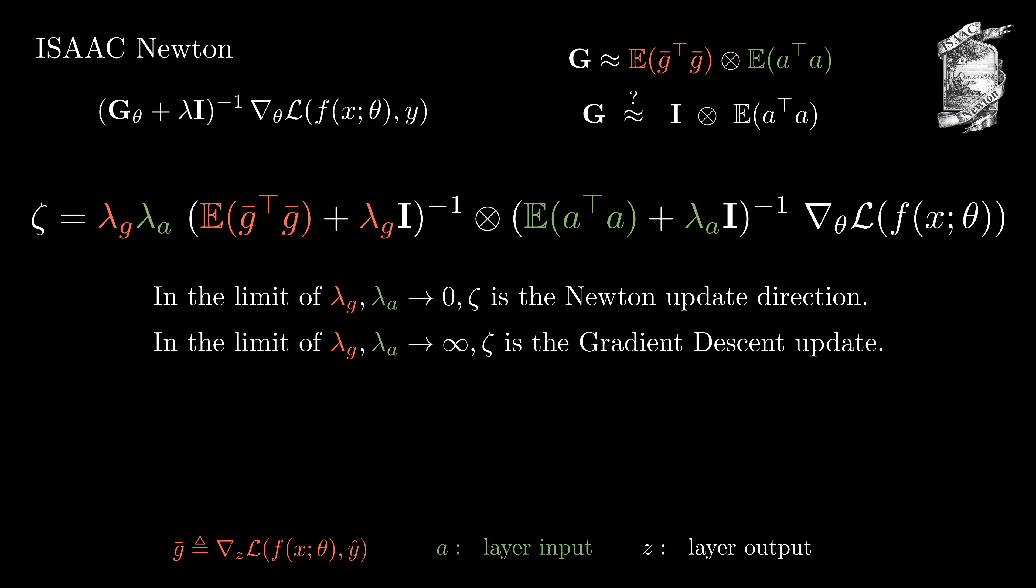If only lambda a goes to infinity, the a transpose a term goes towards the identity. And when lambda g goes to infinity, the g bar transpose g bar term goes towards the identity. We prove the correctness of update zeta independent of both lambdas by showing that zeta is always a direction of increasing loss independent of the choices of lambda g and lambda a.